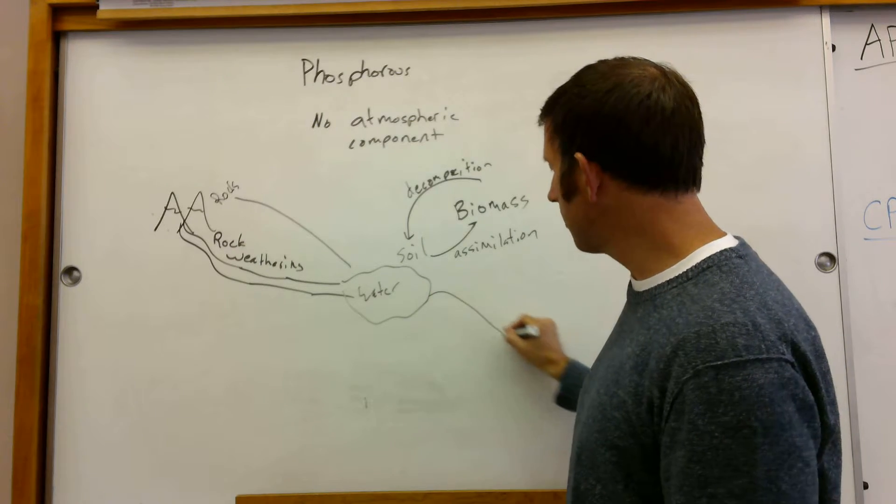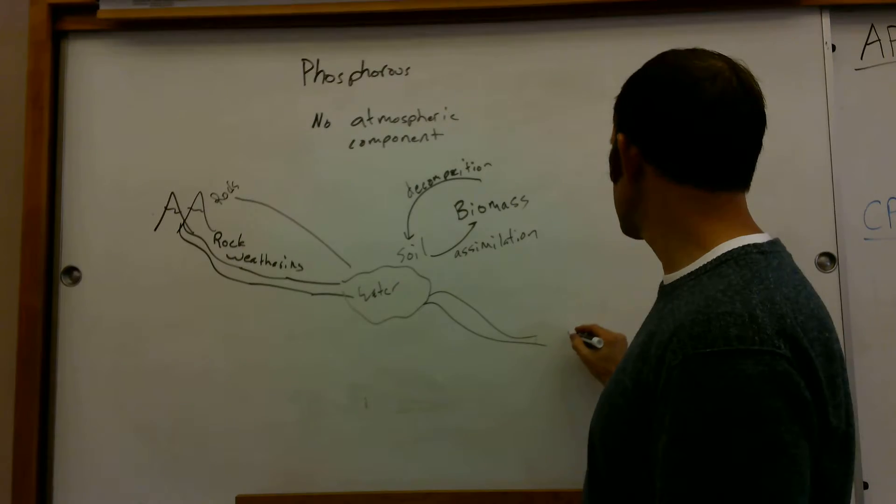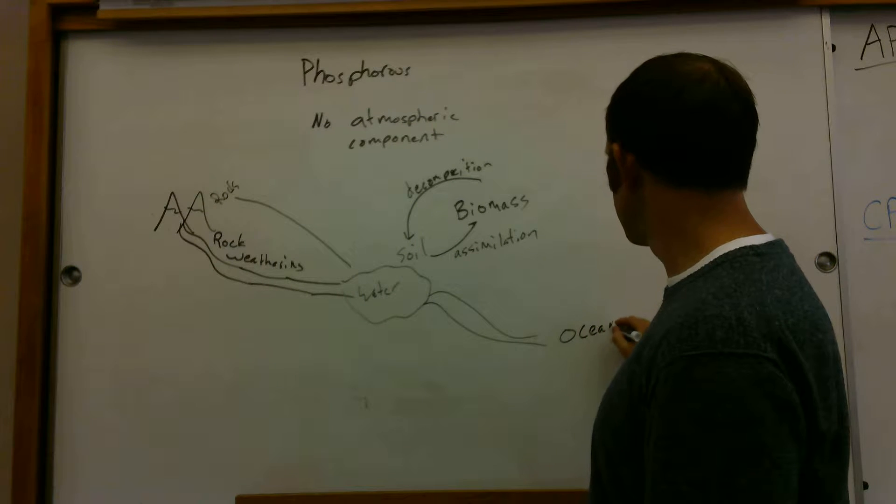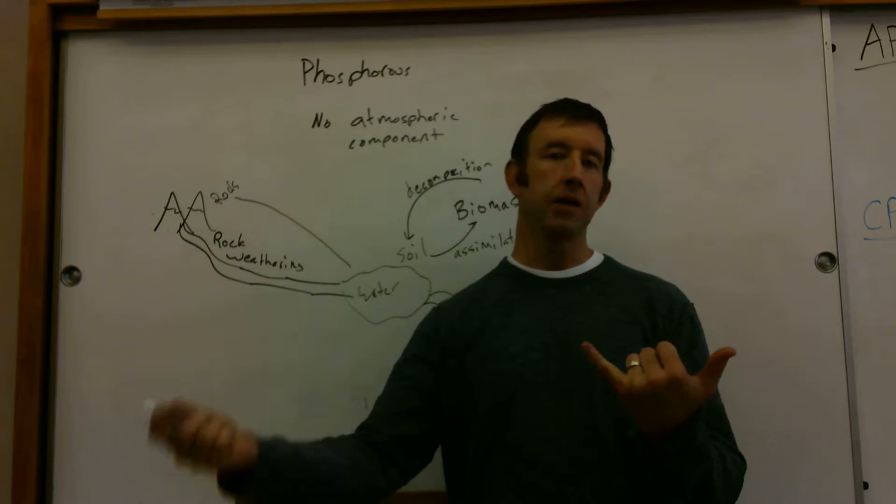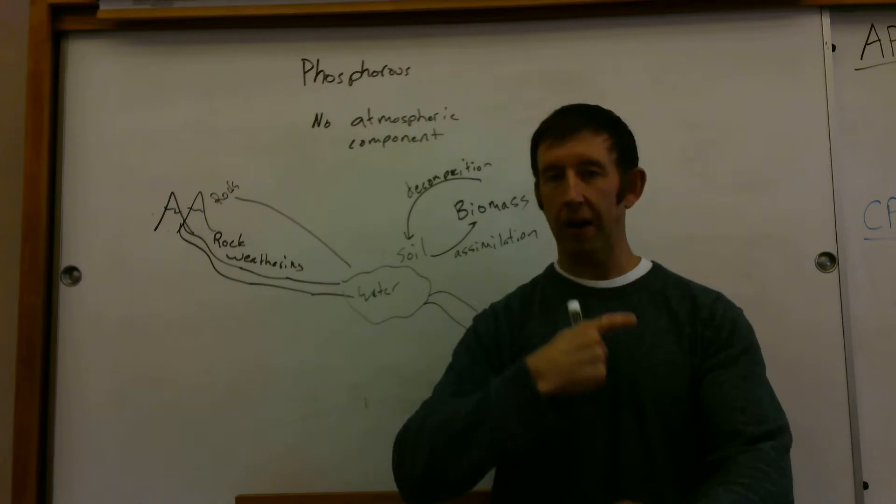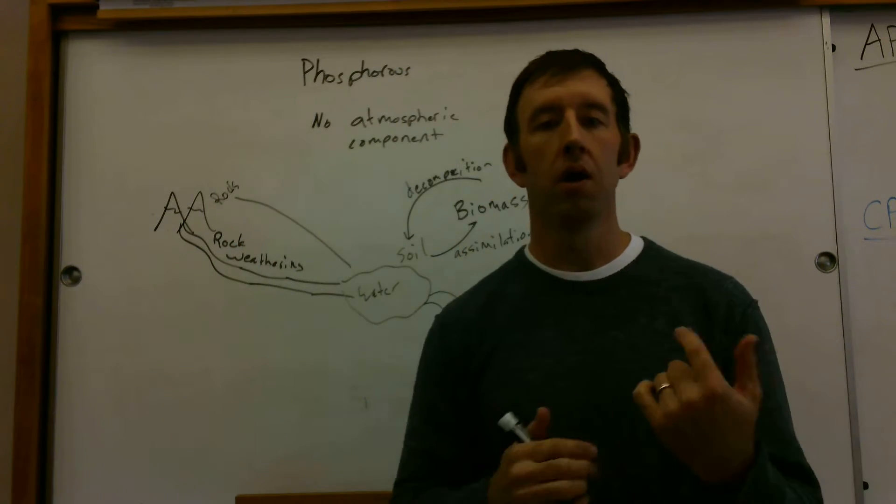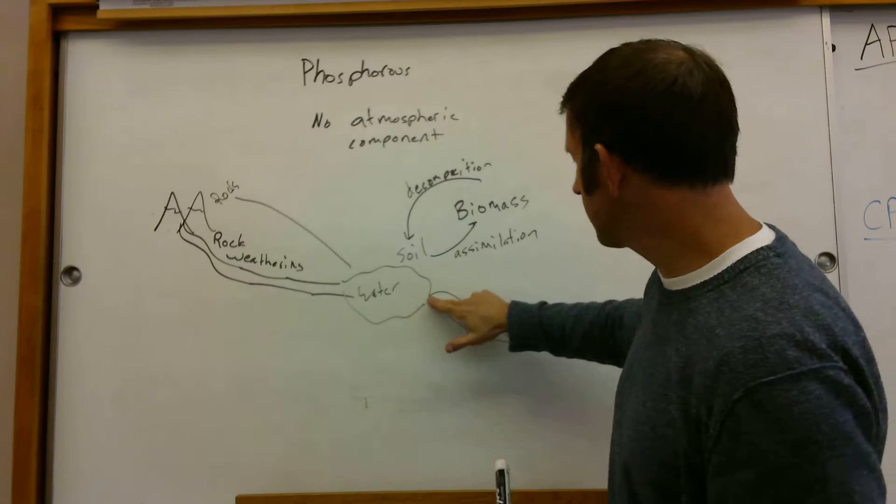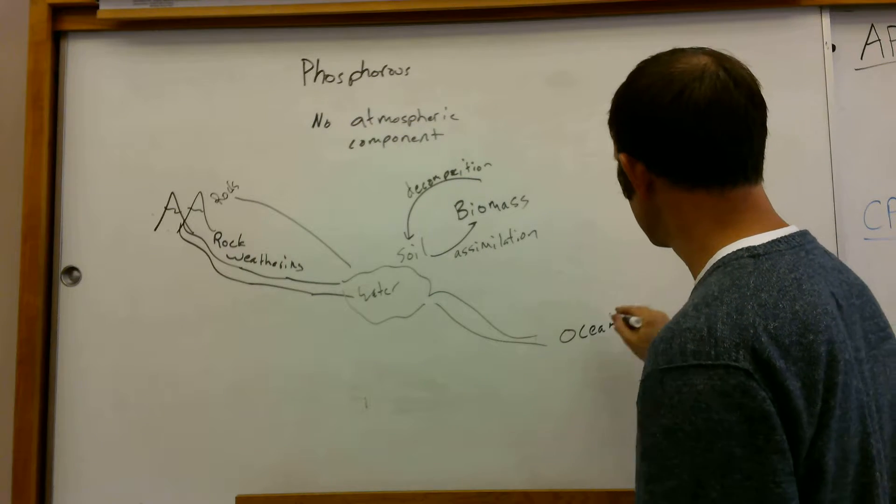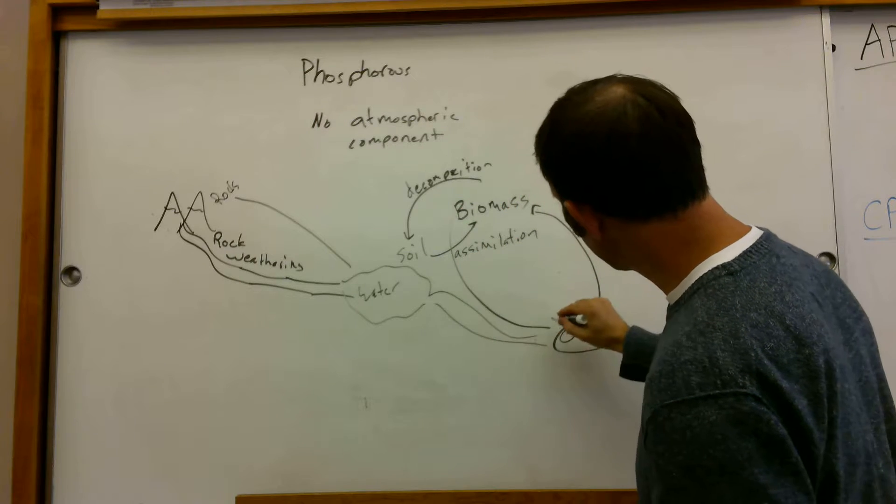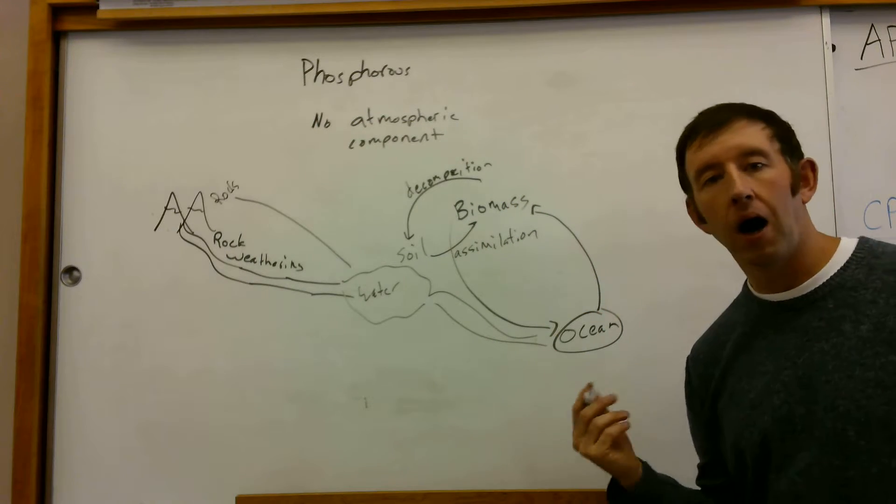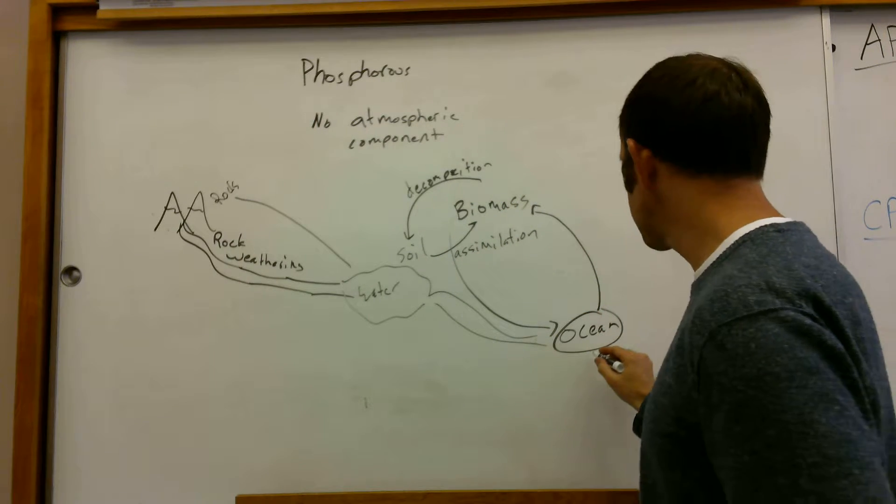All water, or a lot of water, eventually works its way out to the ocean. Now what's in the ocean? It can enter the food chain there, into biomass, decompose back into biomass again, and so on. Some of that phosphorus in the ocean goes into biomass, back into the ocean again, and goes back into rocks.